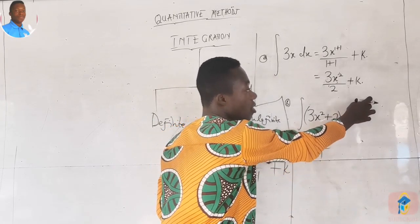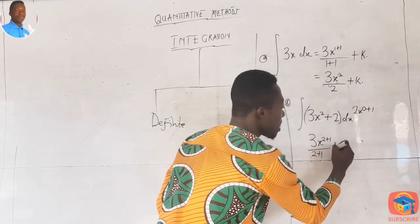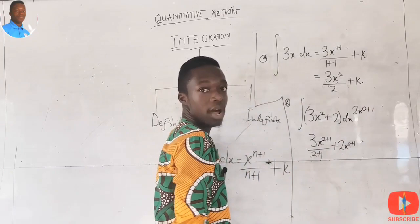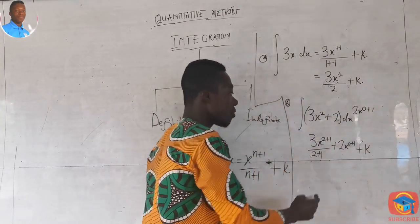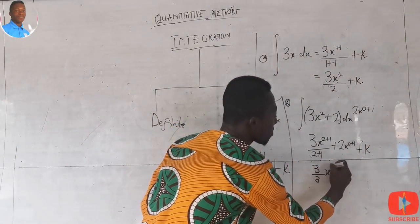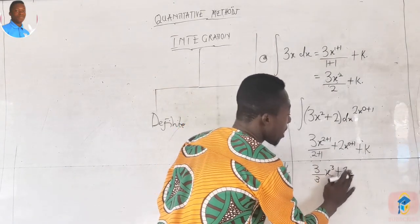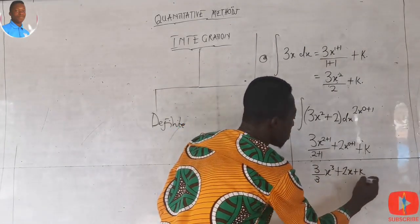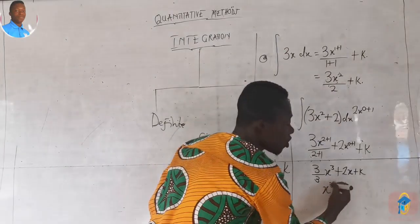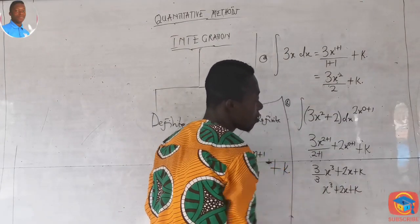So 2x^0 integrated gives 2x^(0+1) divided by (0+1), which is 2x. Adding the constant k, we arrive at 3x³/3 + 2x + k. The 3 in the numerator and denominator cancel, giving us x³ + 2x + k. That is our final answer.